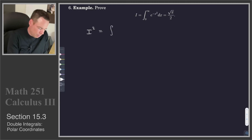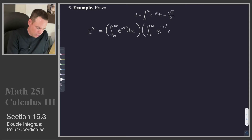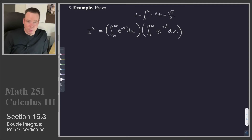So that means I'd like to evaluate the integral from 0 to infinity of e to the negative x squared dx, and the product of it with itself: the integral from 0 to infinity of e to the negative x squared dx. So that's the integral I'm going to look at computing.